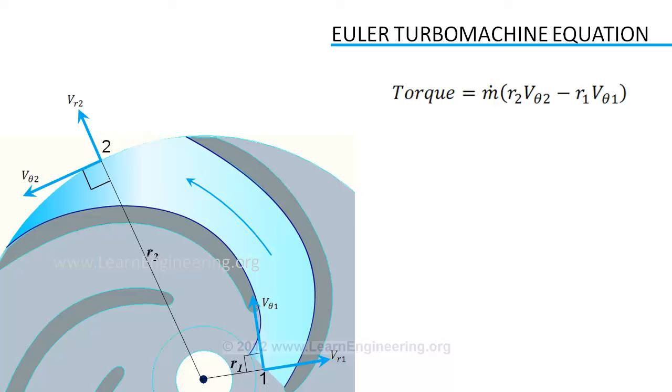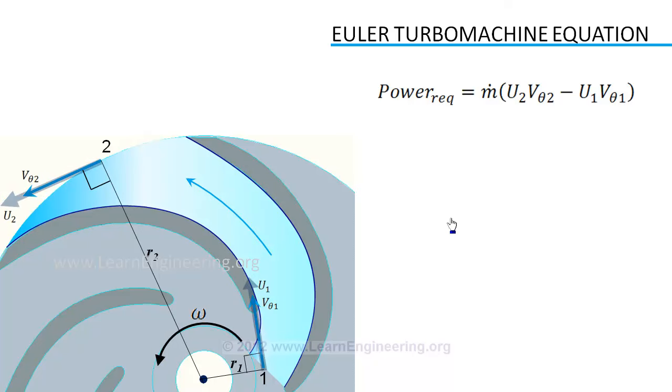If the channel is rotating at an angular velocity omega, the power required to maintain the fluid flow will be torque multiplied by angular velocity. Omega into radius becomes channel velocity, or blade velocity. So, power required for this fluid motion can be taken as the difference in product of blade velocity times tangential fluid velocity.